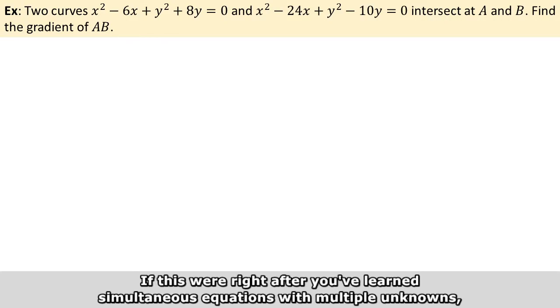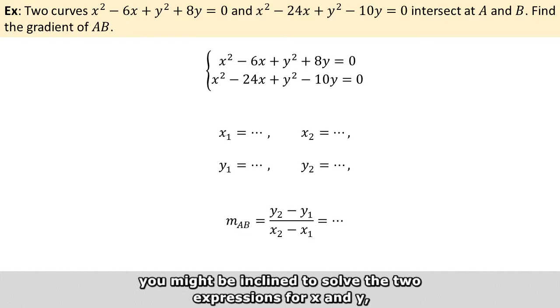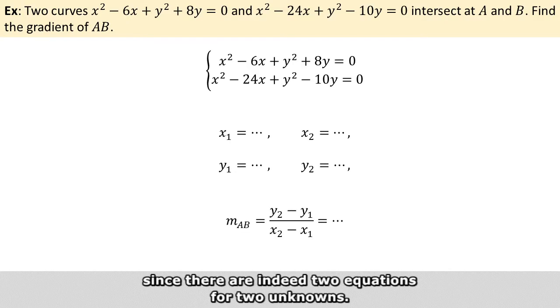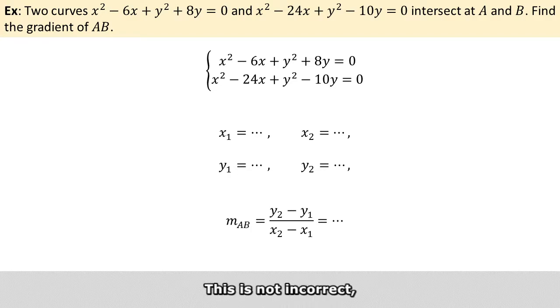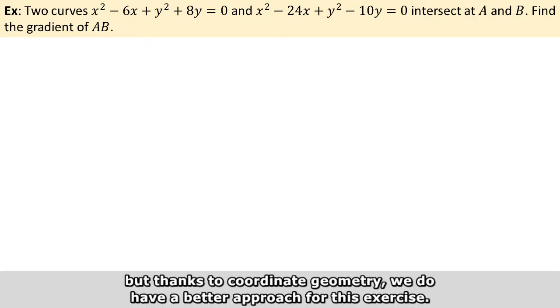If this were right after you've learned simultaneous equations with multiple unknowns, you might be inclined to solve the two expressions for x and y, since they are indeed two equations for two unknowns, and then obtain a gradient by its definition. This is not incorrect, but thanks to coordinate geometry, we do have a better approach for this exercise.